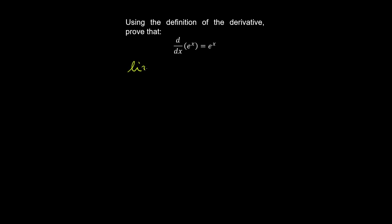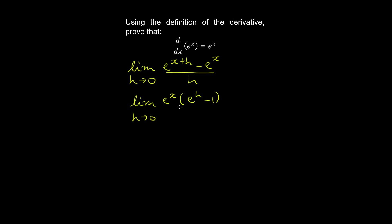Let's use the definition to prove the derivative of e to the x. We have the limit as h goes to zero of e to the x plus h minus e to the x, all over h. Now we can do a bit of algebra to factor out e to the x, giving e to the x times e to the h minus one, over h. Now letting u equal e to the h minus one, we can add one to both sides and take the natural log, so that gives the natural log of u plus one is equal to h.